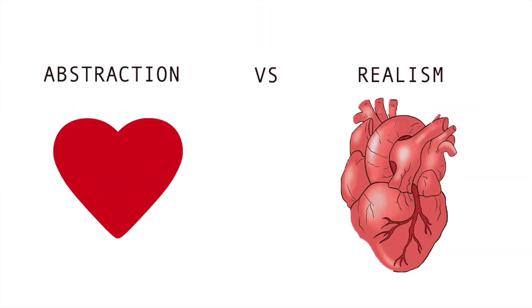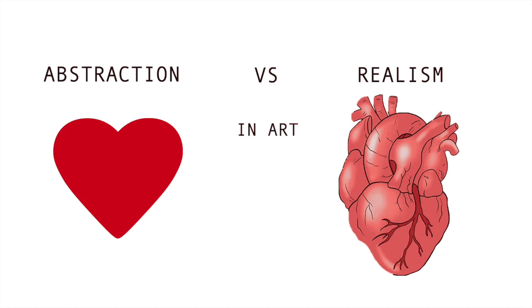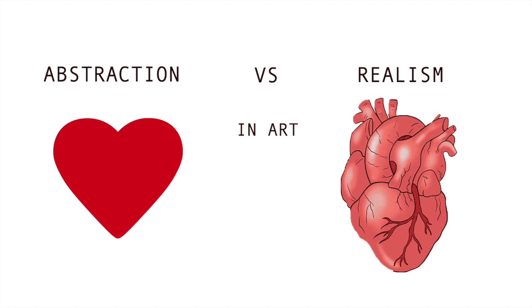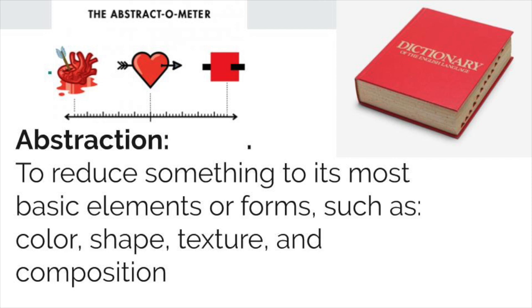Abstraction versus realism in art. In art, we have something called abstraction, which is to reduce something to its most basic elements or forms, such as color, shape, texture, and composition.